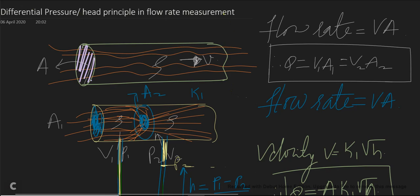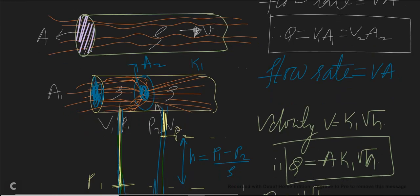When we want to measure the flow rate of any fluid flowing in a pipe, we have to use obstruction type instruments which use the drop in the head or drop in the pressure as a way of measuring the flow rate. Consider a pipe with cross-section A, with fluid flowing at a density of rho and velocity V. The flow rate formula is flow rate equal to velocity times cross-sectional area. At any two places in the pipe the flow rate remains the same, and this basic principle can be exploited to obtain the flow rate.